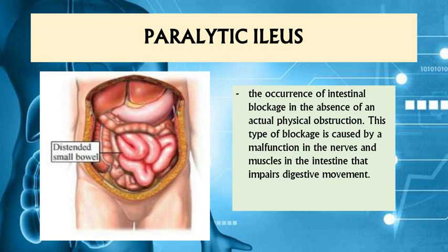Paralytic ileus is described as an occurrence of intestinal blockage in the absence of an actual physical obstruction. This type of blockage is caused by a malfunction in the nerves and muscles of the intestine — as the name implies, a paralyzed intestine, particularly its ileum.